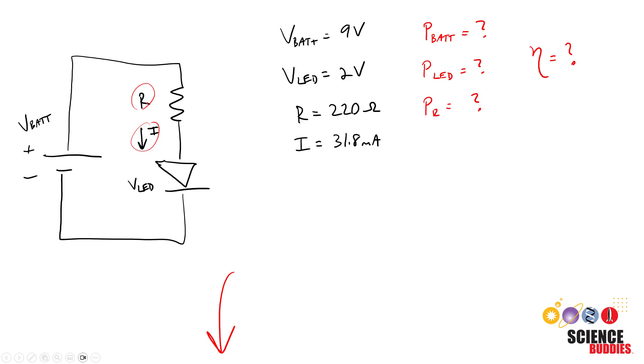Now, in this video, we're going to talk about the power dissipation in the circuit, since some of the power from the battery is dissipated as heat in the resistor, and how you can make some changes to improve the efficiency of your circuit by delivering more of that power to the LED.